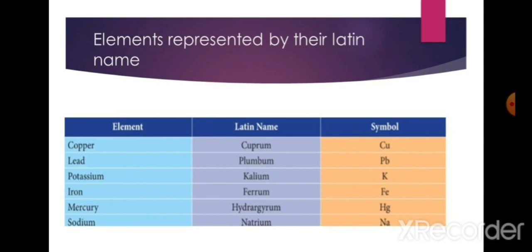Elements represented by their Latin names: the symbol for gold is Au, from its Latin name Aurum. Copper is Cu, from its Latin name Cuprum. For lead, the Latin name is Plumbum, so we use Pb. For potassium, the Latin name is Kalium, so we use K. For iron, the Latin name is Ferrum, so we use Fe. For mercury, the Latin name is Hydrargyrum, so we use Hg. For sodium, the Latin name is Natrium, so we use Na.